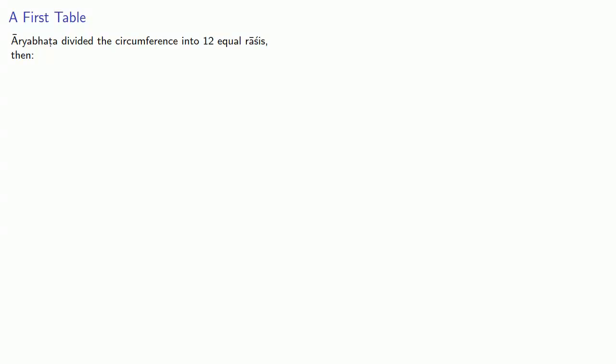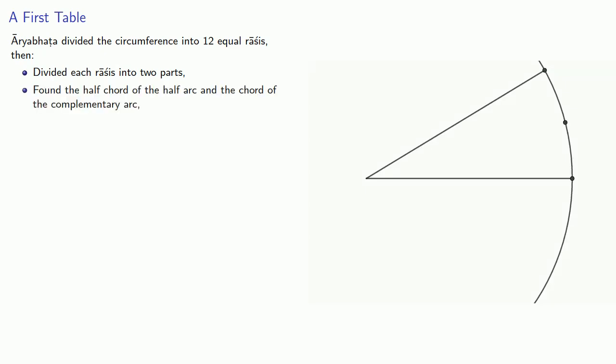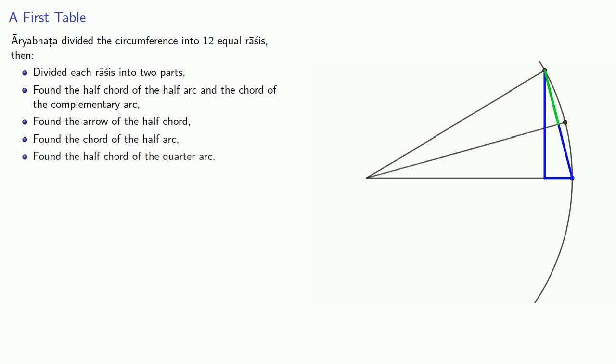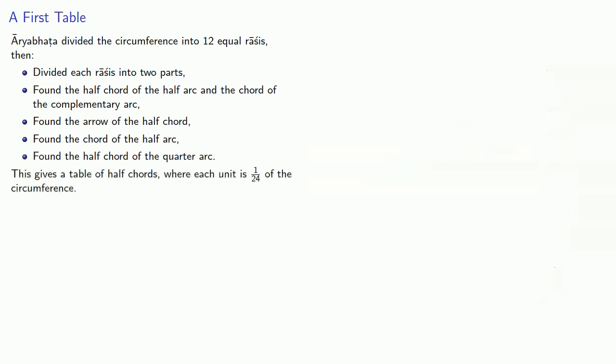Let's summarize our results so far. Aryabhata divided the circumference into 12 equal rhases, then divided each rhase into two parts, found the half chord of the half arc and the chord of the complementary arc, found the arrow of the half chord, which allowed him to find the chord of the half arc, which could then be used to find the half chord of the quarter arc. Put together, this gives us a table of half chords where each unit is 1/24th of the circumference.